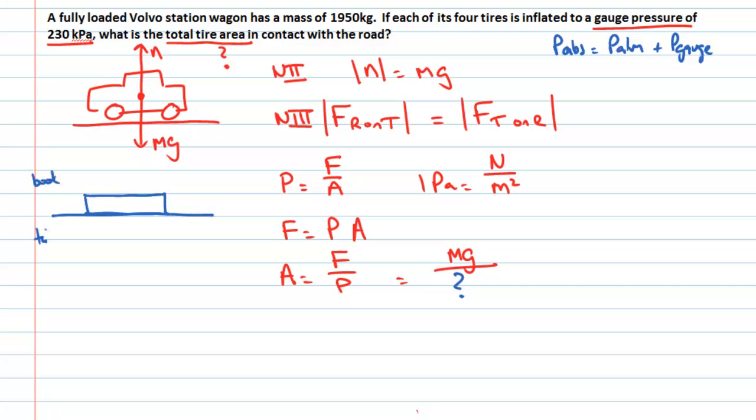So this is a book on a table. It's very much like the idea of my tyre on a road here. And when we think about the book on the table, previously we've always written that the book has some weight mg acting downwards and the table exerts a normal force acting upwards here. And we haven't cared about pressure at all.